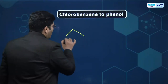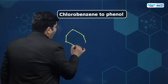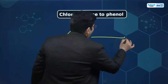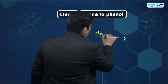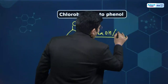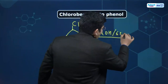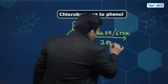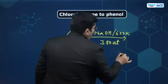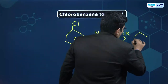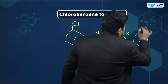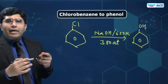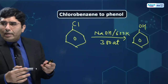Now we are going to make phenol from chlorobenzene — we have already studied this. We will introduce groups one by one. Chlorobenzene by the Dow process: 623 Kelvin and 300 atmospheres gives phenol. Right — so one by one we keep introducing groups.